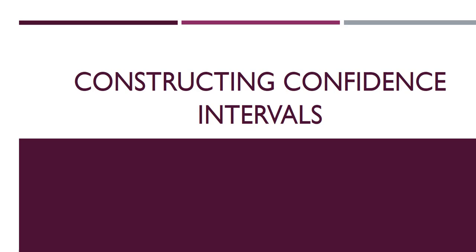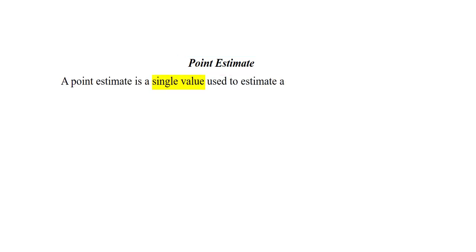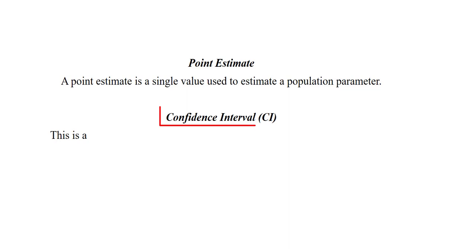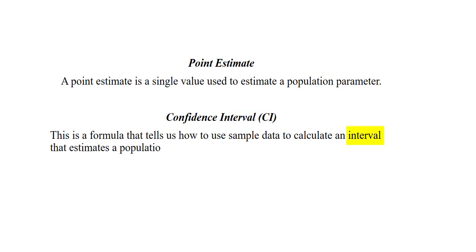Hi. In this video, I will be talking about how to construct confidence intervals. We'll start by defining a point estimate. A point estimate is a single value used to estimate a population parameter. And then a confidence interval is a formula that tells us how to use sample data to calculate an interval that estimates a population parameter.